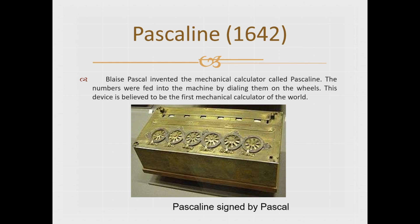The Pascaline was invented by Blaise Pascal in 1642. Blaise Pascal invented this mechanical calculator called Pascaline. Numbers were fed into the machine by dialing them on wheels. This device is believed to be the first mechanical calculator of the world. This is the Pascaline machine, invented by Blaise Pascal.